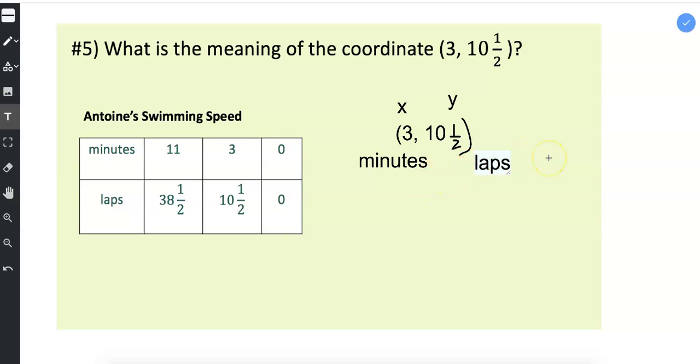So now I know that when I write my sentence, I need to include three minutes and 10½ laps. And the storyline here is that Antoine is a swimmer. So I can write a sentence about Antoine that goes something like this.